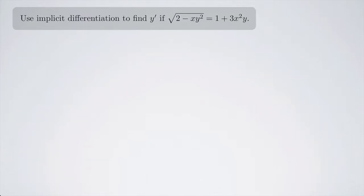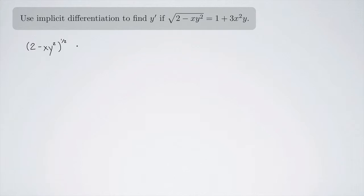Use implicit differentiation to find y-prime if the square root of 2 minus xy squared equals 1 plus 3x squared y. To use implicit differentiation, we are going to take the derivative of this expression without solving for y first. Solving for y here might be kind of a pain, so it's probably optimal to use implicit differentiation. Let's first rewrite this — I'm going to rewrite the square root as 2 minus xy squared to the 1/2 power, just to make it a little bit easier to see what's going on.